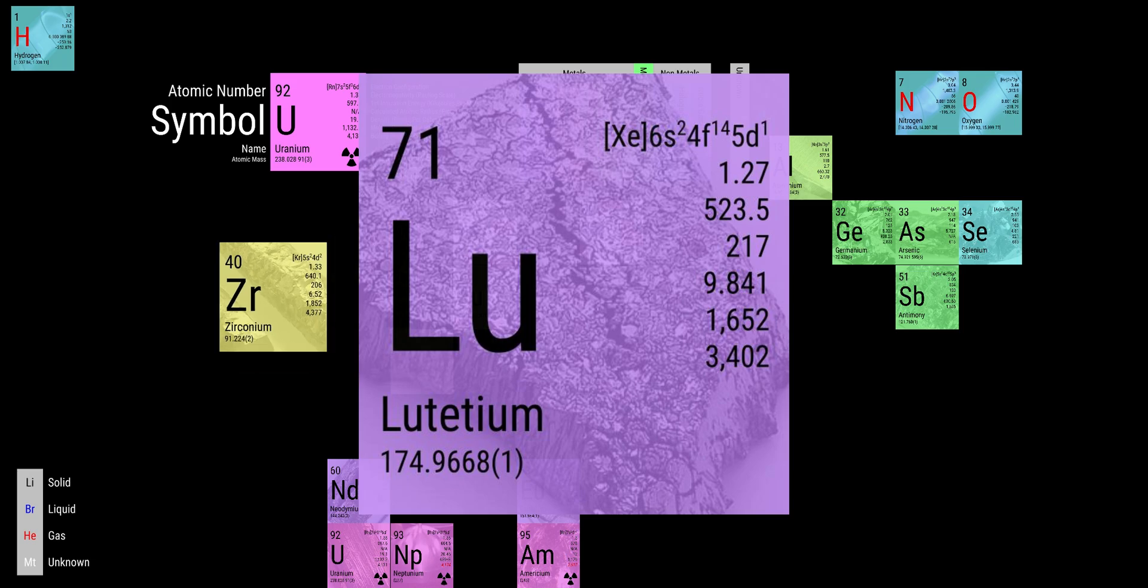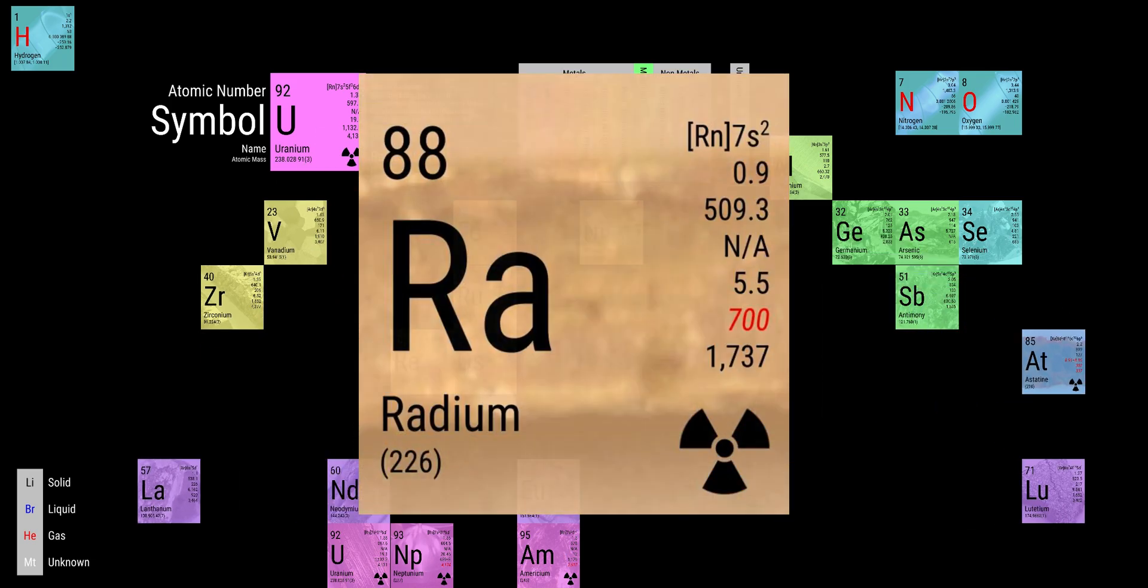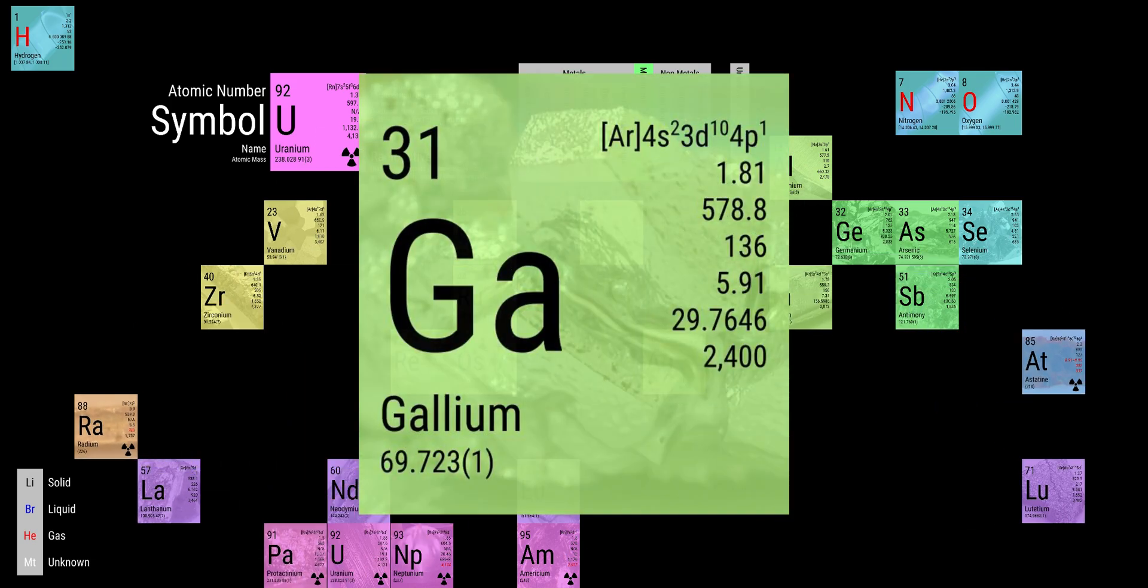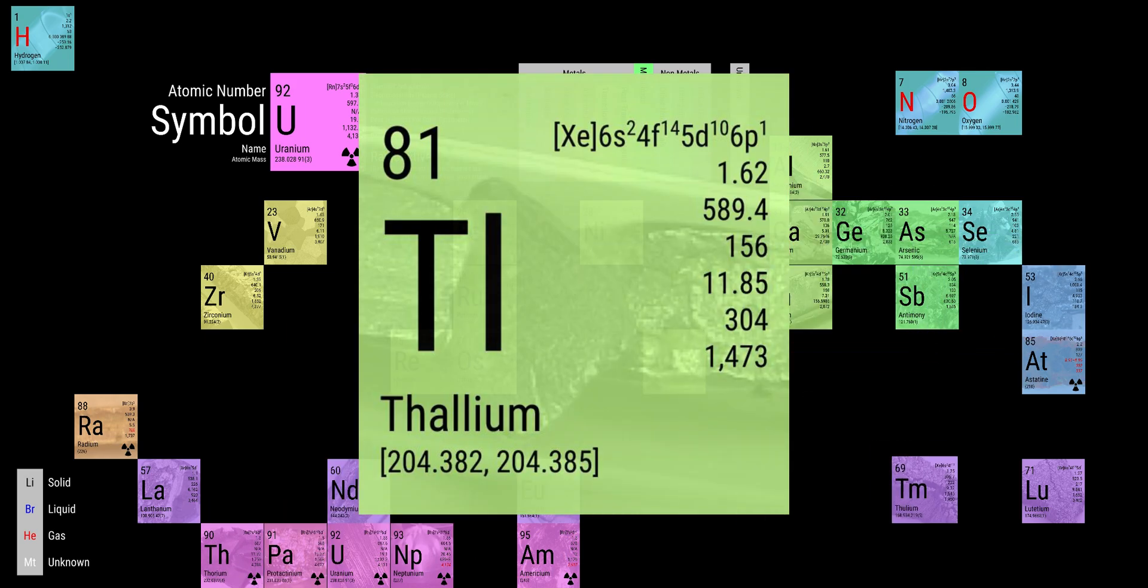uranium, europium, zirconium, lutetium, vanadium, and lanthanum, and osmium, and astatine, and radium, and gold, and protactinium, and indium, and gallium, and iodine, and thorium, and thulium, and thallium.